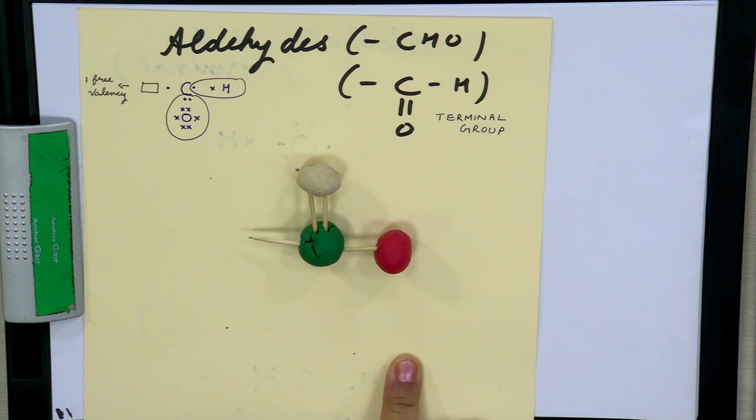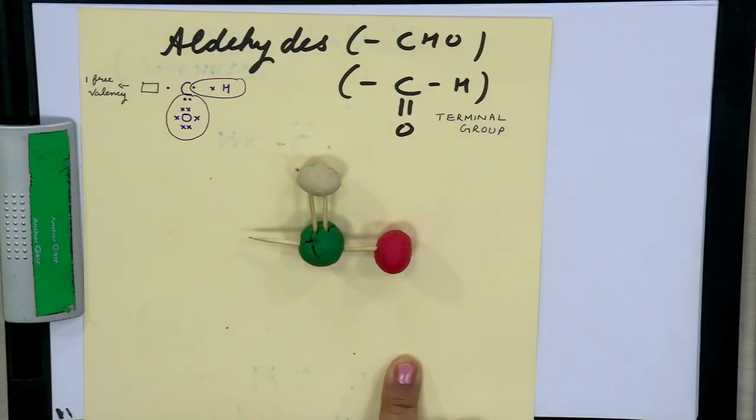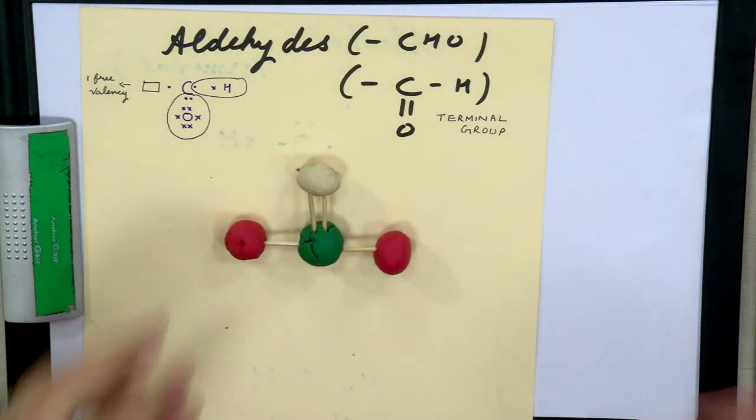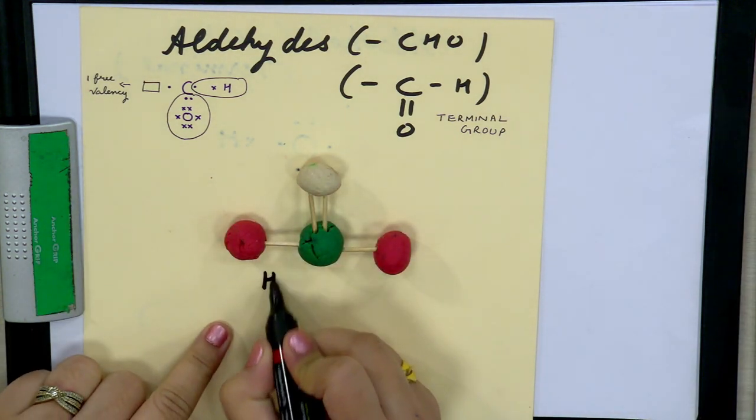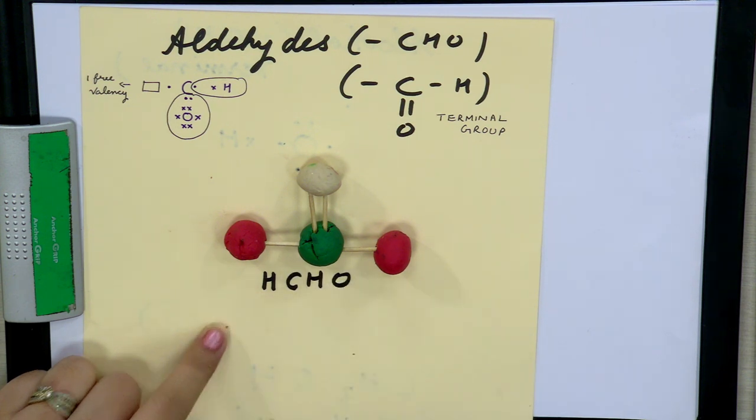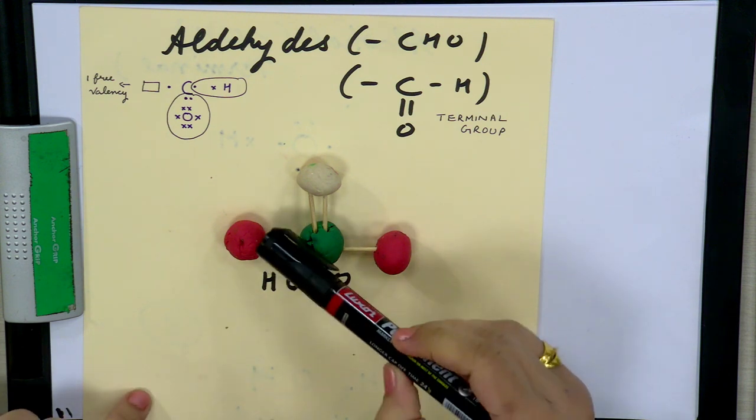Since many of you may not have ball-and-stick models at home, we are doing it with clay. This present structure shows one carbon — this is the first member. One valency is free. We cannot put oxygen because oxygen's valency is two and it won't be stable. We cannot put another carbon because then it won't be the first member. So we put one hydrogen to complete the structure. The formula becomes H-CHO, and the total number of bonds is four.